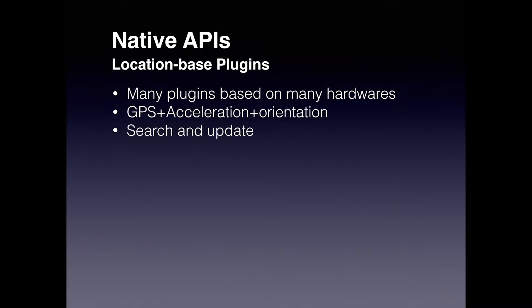Motion sensing plugins give different data for different sensors inside the device under different circumstances. In this section we are going to cover the plugins for compass orientation, acceleration of the device in various directions, and GPS location data for orientation in the real world.